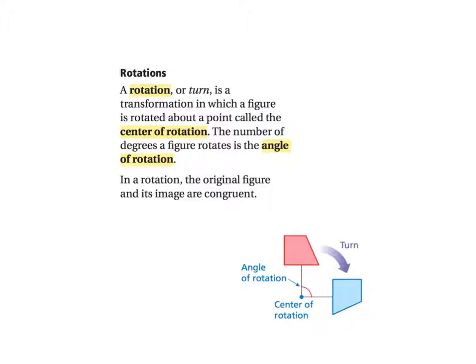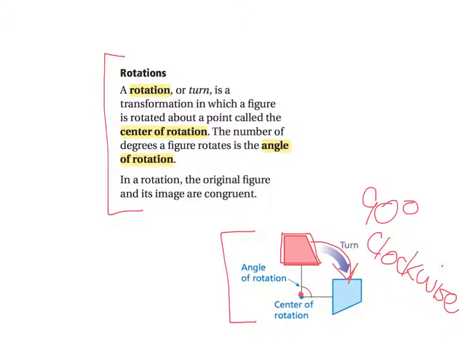In a rotation, the original figure and its image are congruent. So over here, you can see our center of rotation. You can see the original figure here. And you can see that it has been rotated 90 degrees, and that would be in a clockwise direction. Pause the movie now, copy the definition for rotations, and the sample image, and turn showing the rotation of this trapezoid 90 degrees in the clockwise direction.